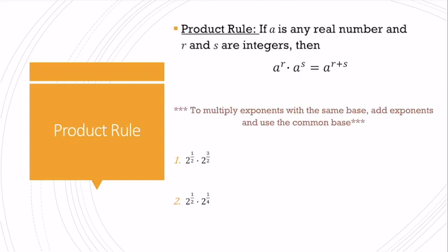So, the product rule. If A is any real number and R and S are integers, so if I have two exponents with the same base, I add their exponents.